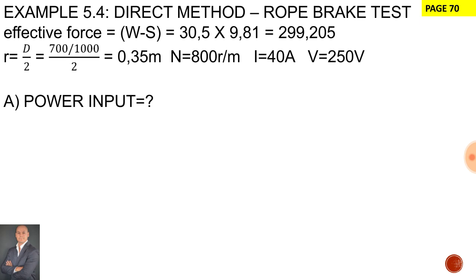Now the first part of the question asks us to calculate the power input. Now if you look at the formula on your formula sheet you'll notice that the power input is actually not given. However you can derive it by looking at the efficiency formula and you'll note that power input is at the bottom of the equation. So therefore power input is equal to V times I. The supply voltage is 250 and the supply current is 40 amps. If we simplify that it means the input power is 10 kilowatts.